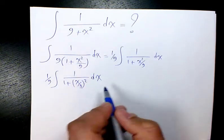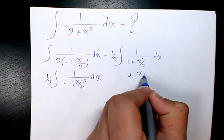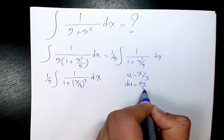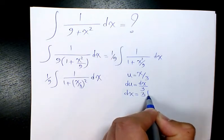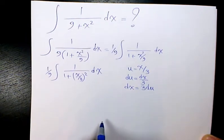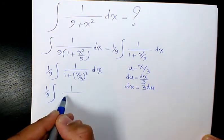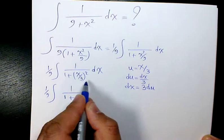Then we can say u = x/3, so du = dx/3, which means dx = 3du. So we have 1/9 times the integral of 1/(1 + u²), and instead of dx I put 3du.